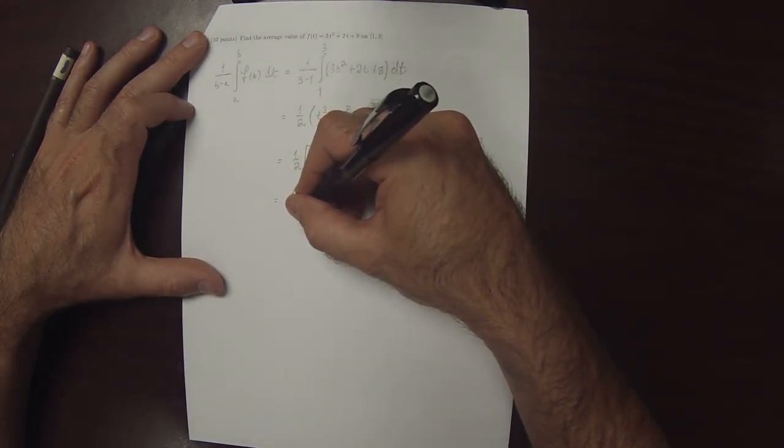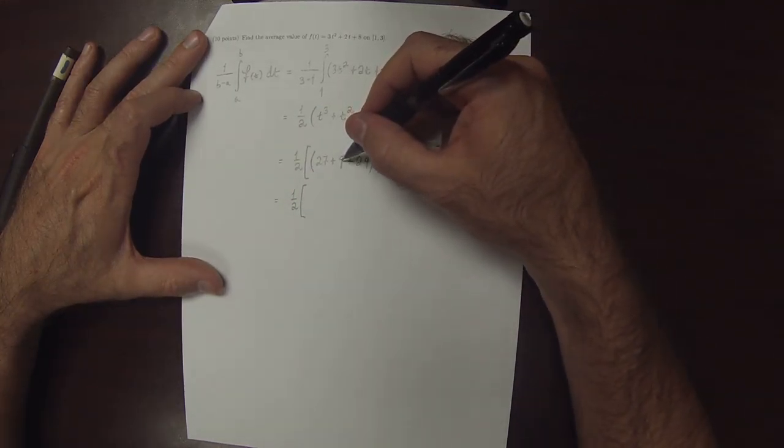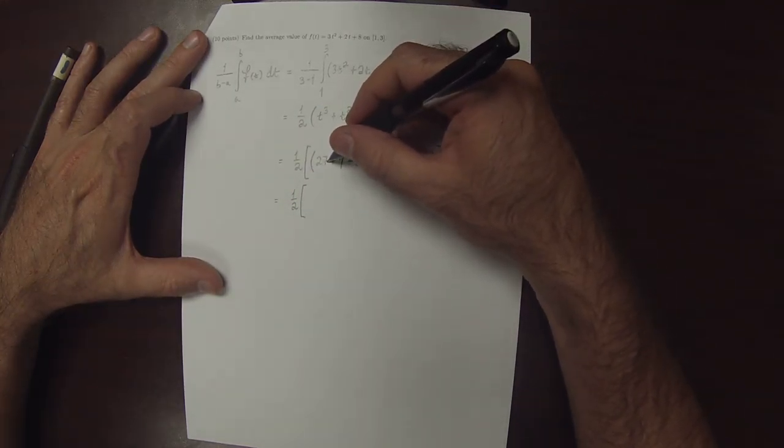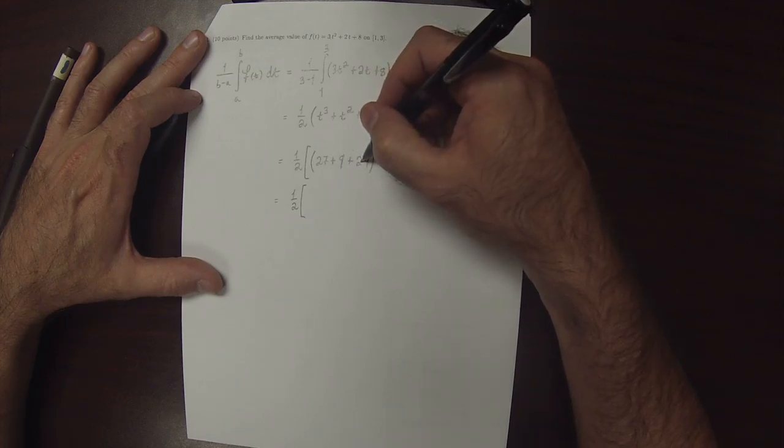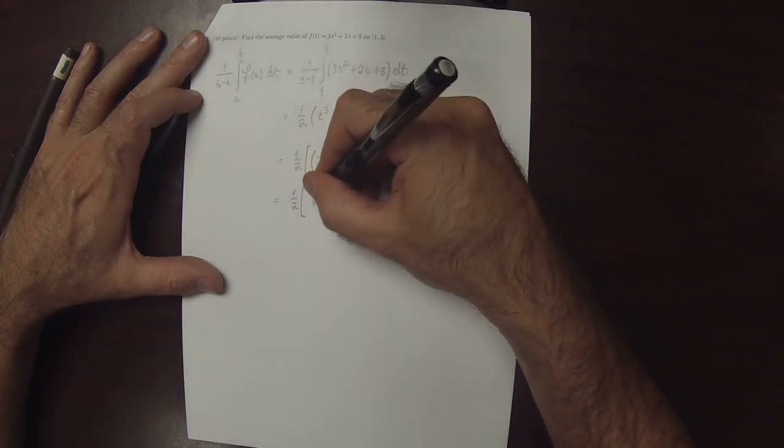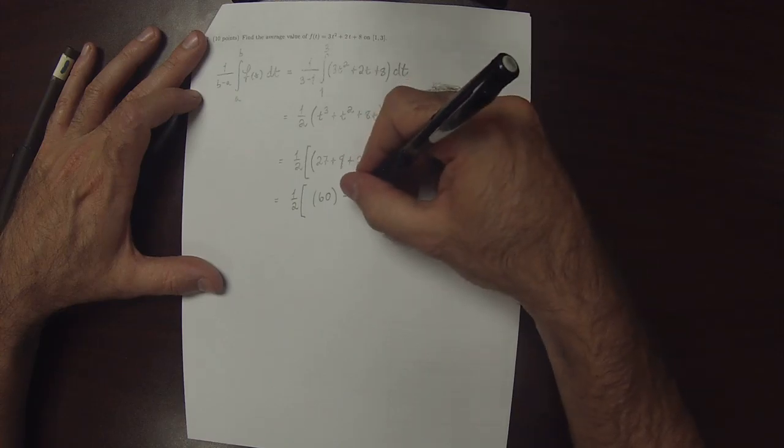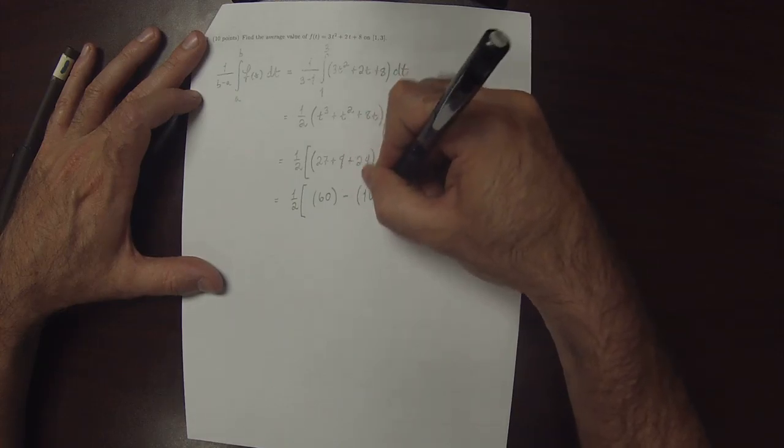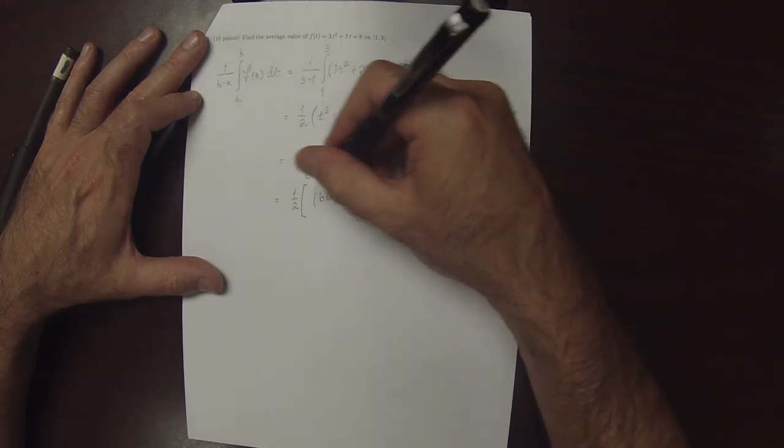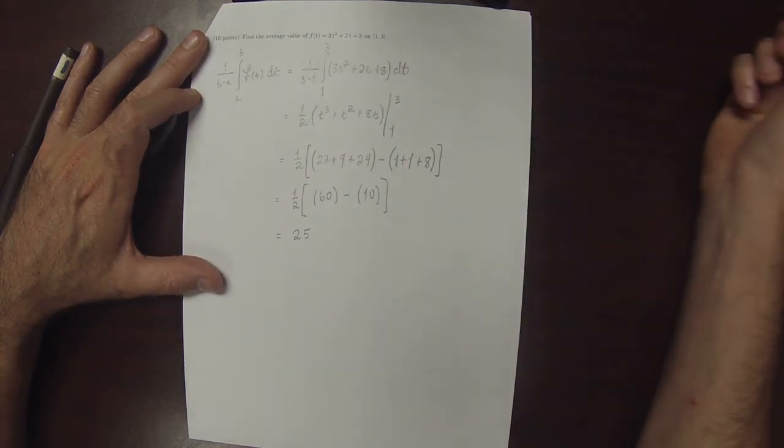So that's half. 27 plus 9 is 36 plus another 24 is 56 plus 4 is 60. So that would be 60 minus 1 plus 1 plus 8 is 10. 60 minus 10 is 50 over 2 is 25.